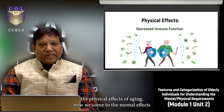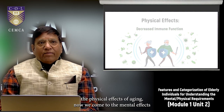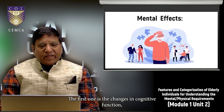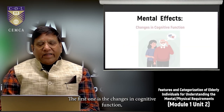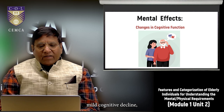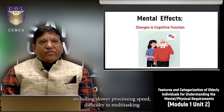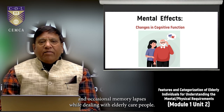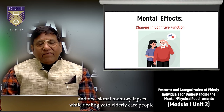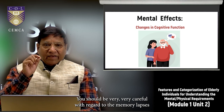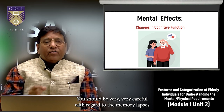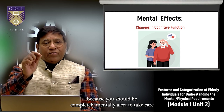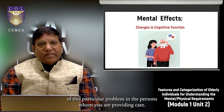Now we come to the mental effects of aging. The first is changes in cognitive function: mild cognitive decline including slower processing speed, difficulty in multitasking, and occasional memory lapses. As an elderly caregiver, you should be very careful regarding memory lapses and remain mentally alert to handle this problem.